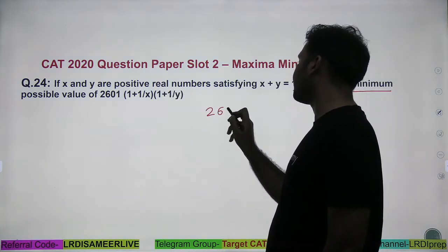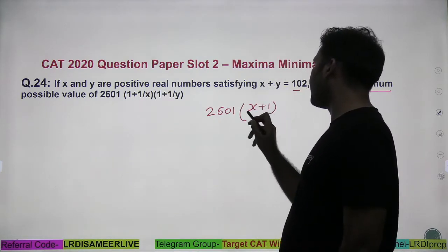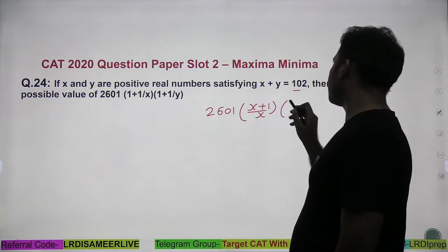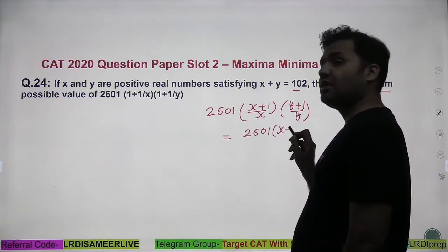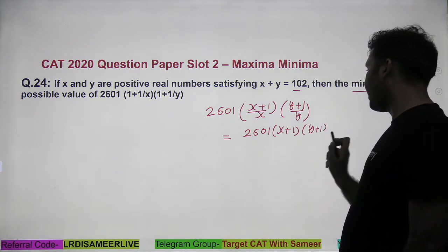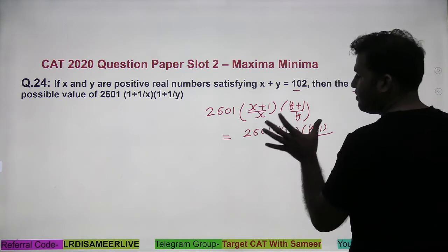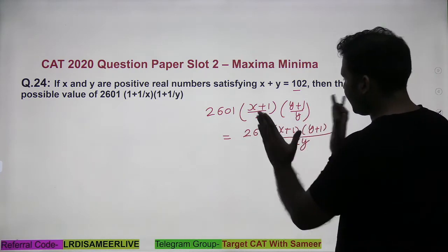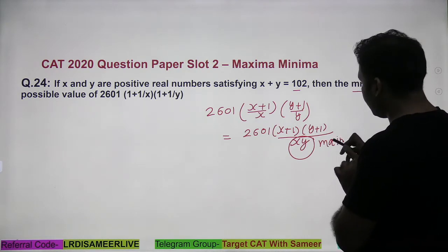If I rewrite this expression, you see that (1 + 1/x) can be written as (x+1)/x, and similarly (1 + 1/y) can be written as (y+1)/y. So the whole expression is basically 2601 into (x+1)(y+1) divided by x·y. To minimize this expression, I need to maximize the value of x·y.